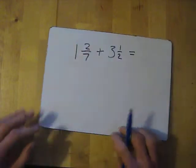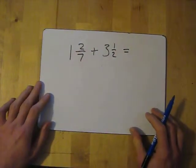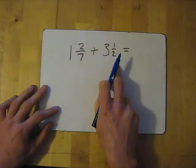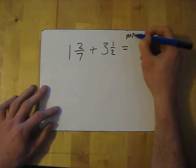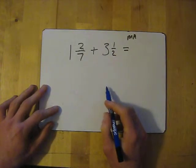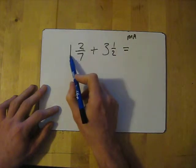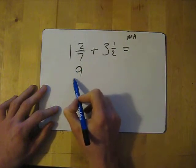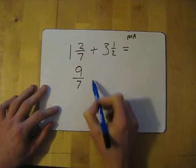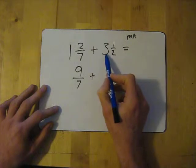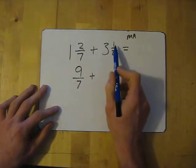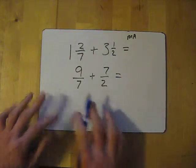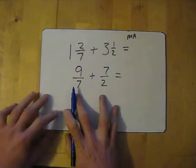Let's look at another one: 1 and 2 sevenths add 3 and a half. Again, convert both mixed numbers into improper fractions using MA — multiply and add. 1 times 7 is 7, add the 2 gives me 9, so it's 9 over 7. Then 3 times 2 is 6, add 1 gives 7, so it's 7 over 2. We need a common multiple because the denominators are different and we're adding.